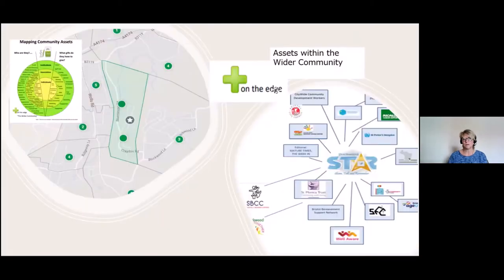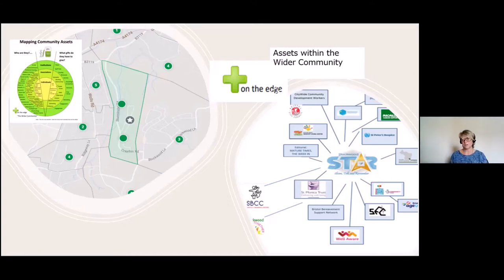Reflecting on what I was talking about — mapping community assets and building this model of what exists in the community — this is our community of Stockwood, and we've established lots of things that are going on. On the edge of this, looking at the assets and the wider community, we've got connections with other organisations. When I've established a group with the common purpose of developing a particular project, it's also about getting us to look outside the box — approaching organisations that could also support what we're trying to achieve.